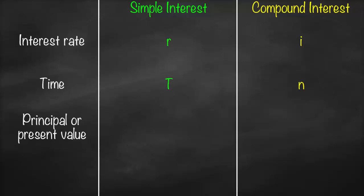For principal or present value, for simple interest we use P as principal or PV as present value. For compound interest it's the same — P for principal or PV as present value.